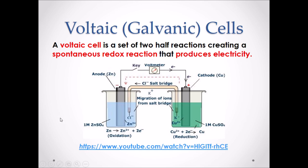We have two half reactions, one in each beaker. Starting with the oxidation half reaction, which releases electrons — through the oxidation half reaction that occurs in one beaker, electrons are released. They will then travel through the external wire and will eventually be gained through the reduction half reaction, which occurs in the other beaker.